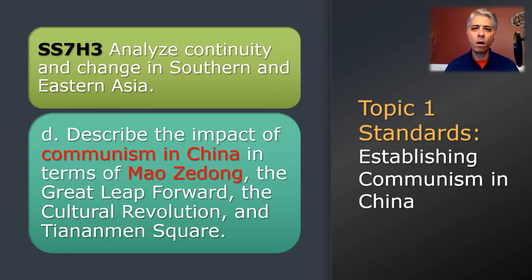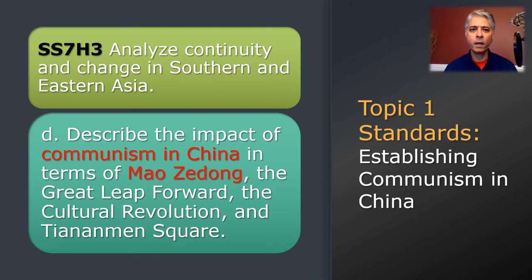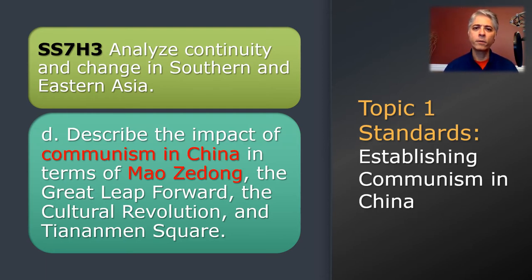All of our topics in Unit 11, the history of Southern and Eastern Asia, fall under social studies standard SS7H3: Analyze Continuity and Change in Southern and Eastern Asia. For Topics 1 and 2, we're going to be using Element D to describe the impact of communism in China in terms of Mao Zedong, the Great Leap Forward, the Cultural Revolution, and Tiananmen Square.